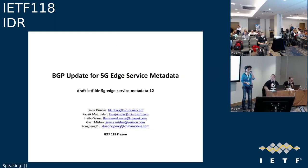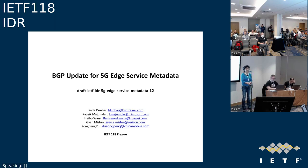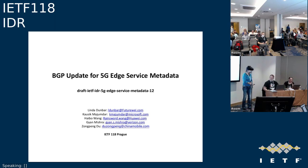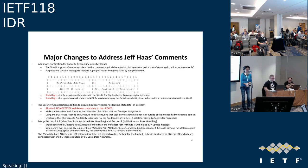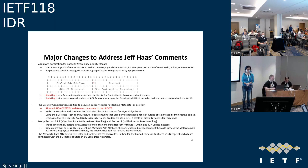This is an update of the discussion on the mailing list primarily. This draft is really to propose a new metadata path attribute — it's less about the metrics, which the CATS working group is discussing. In BGP, we're proposing a metadata path attribute. This has been in the working group for a while. Here are the major changes from mailing list discussion. In dash-11, we have added site ID, site index, and capacity availability index to the metadata.